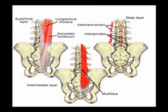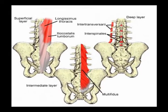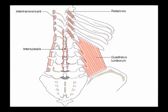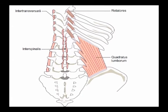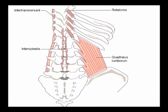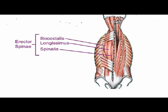There are three layers of spinal muscles: the deep layer, the intermediate layer, and the superficial layer. The deep layer consists of the interspinalis muscles, the intertransversariae, and the quadratus lumborum. The intermediate layer is the multifidi muscles, and the superficial layer is the erector spinae muscles.